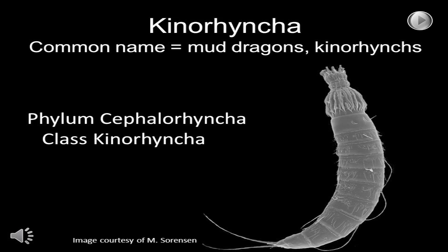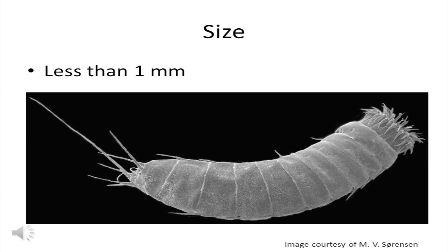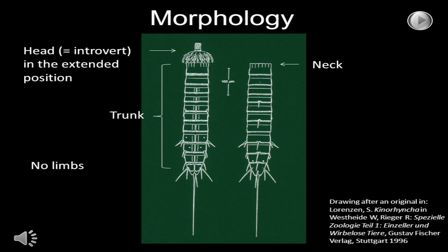Continuing with the meiofauna, the kinorhyncha are next. They're sometimes called mud dragons, but deep sea biologists call them kinorhynchs. They are a class in the cephalorhyncha. Kinorhynchs are small — they're all less than a millimeter. Morphologically, kinorhynchs have three body regions: a head (sometimes called the introvert), a neck, and a trunk. The head is the most interesting part, because it can be extended out and then withdrawn into the animal, and the animal does most of the things it needs to do as an organism using that head.